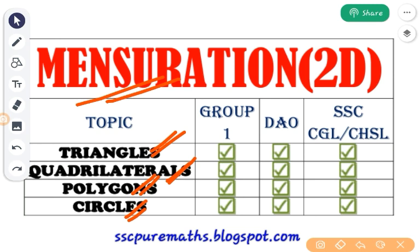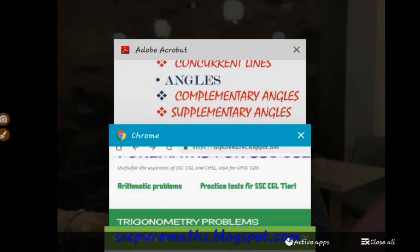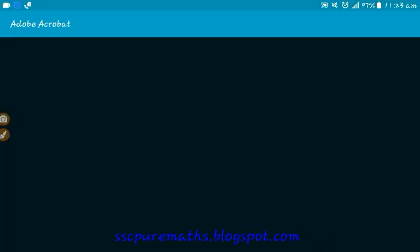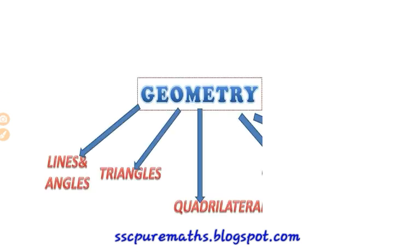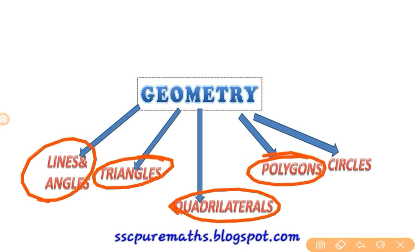To cover these two topics simultaneously, I will do a series of videos. In Geometry, there are five main topics: lines and angles, triangles, quadrilaterals, polygons, and circles. Lines and angles is the basic topic — you must cover it first. Questions in your exam will come from these four core topics, but you need the basics to understand them.